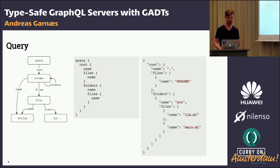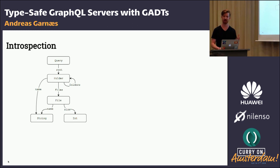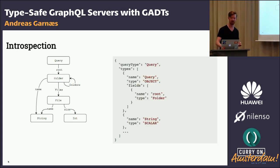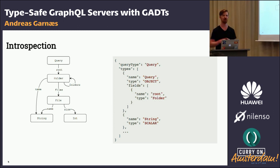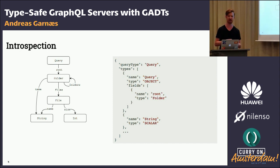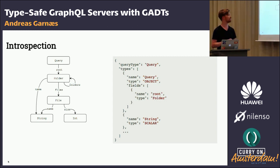The second operation we need to support over this graph is introspection. Given a graph like this, we need to be able to generate a response — some JSON that describes the shape of the graph. We can see that the entry point is called Query and we'll get a list of JSON objects, where each corresponds to one of the nodes in the graph, showing the fields and so on. Basically we should be able to generate that schema description.